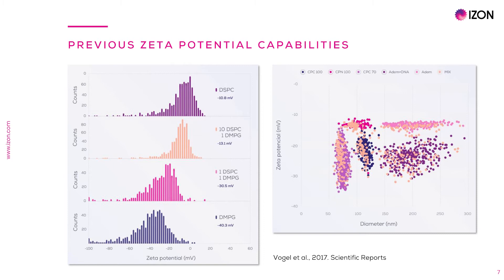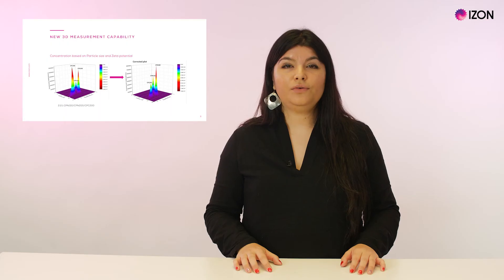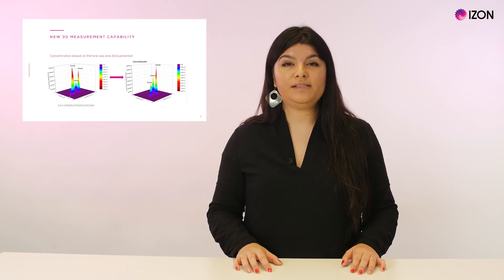In this plot, we can see that a pentamodal mix of particles of same sizes and different charge, such as charged carboxylated polystyrene CPC-100 versus bare polystyrene CPN-100, or magnetic particles versus magnetic particles with DNA, are well separated into different populations. So far, particle size and zeta potential can be determined simultaneously.